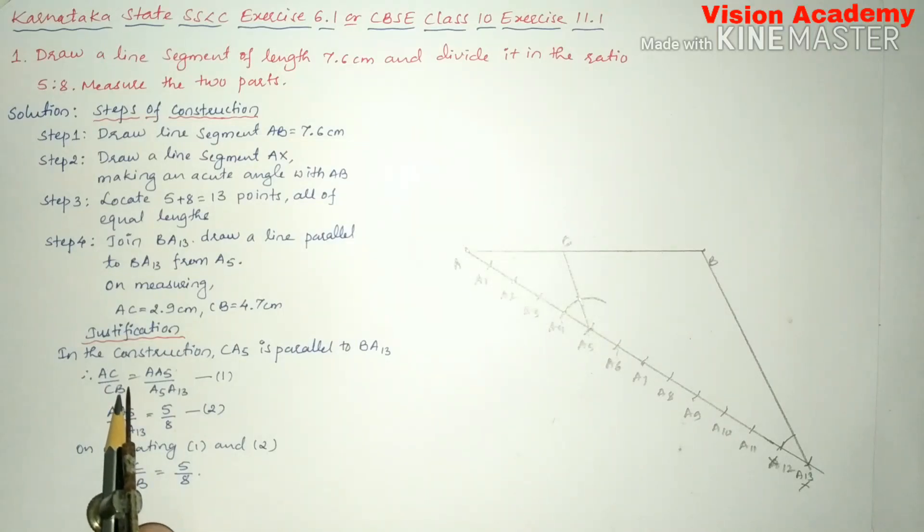So on equating equation 1 and 2, here you can see AC by CB is equal to 5 divided by 8. Hence the justification.